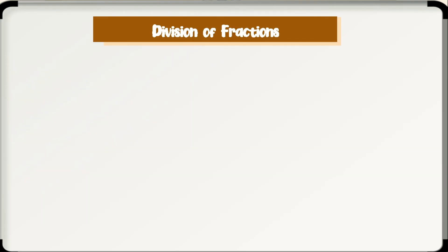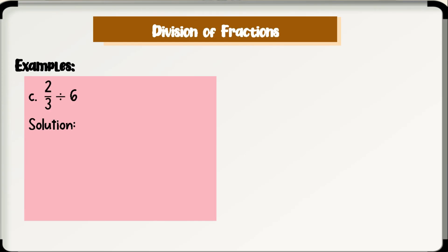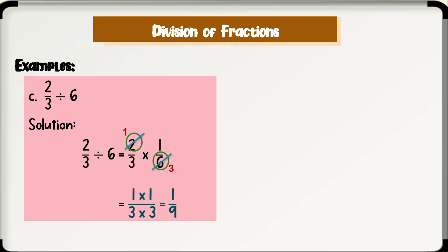Example letter C: 2 over 3 divided by 6. First, copy 2 over 3 and change the operation from division to multiplication. Next, get the reciprocal of 6, which is 1 over 6. Apply the cancellation method on 2 and 6 since they have a common factor of 2: 2 divided by 2 is 1 and 6 divided by 2 is 3. Multiply the uncancelled factors: 1 times 1 over 3 times 3, which equals 1 over 9. Therefore, 2 over 3 divided by 6 is equal to 1 over 9.